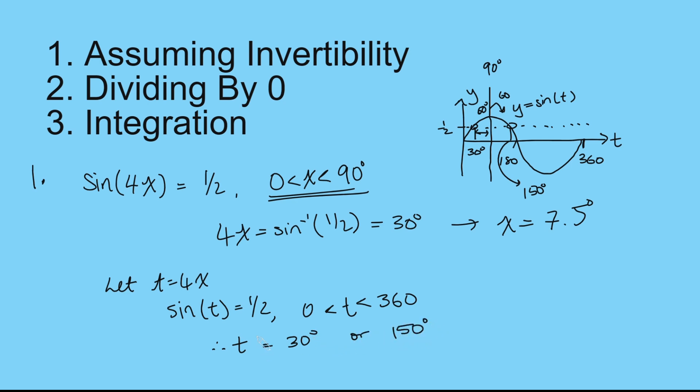Now, t though is 4x. So we can say that 4x is 30 degrees or 150 degrees. And then divide both sides by 4. And we get x is either 7.5 degrees or x is, what is that, 37.5 degrees. And that would be our answer here.